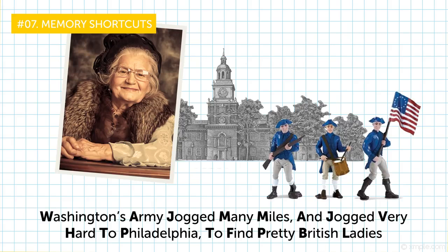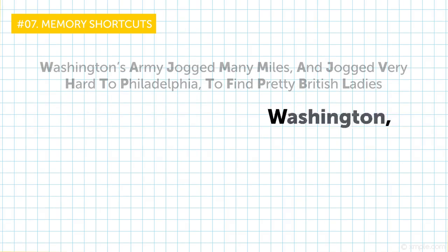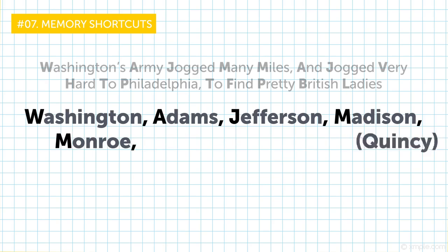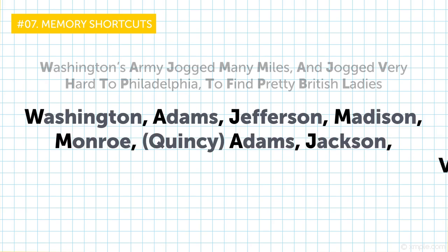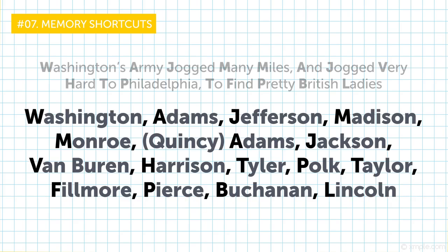Here is a list of the first American presidents by the last name: Washington, Adams, Jefferson, Madison, Monroe, Quincy Adams, Jackson, Van Buren, Harrison, Tyler, Polk, Taylor, Fillmore, Pierce, Buchanan, Lincoln. So if you memorize this line, remembering the presidents will be way easier. You can try using mnemonic devices, those lines with a hidden meaning, to keep other information in mind as well.